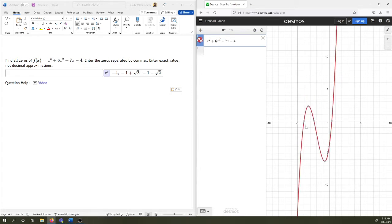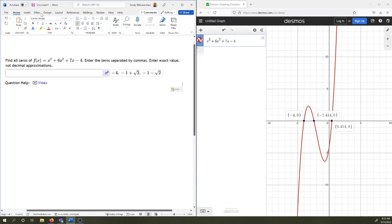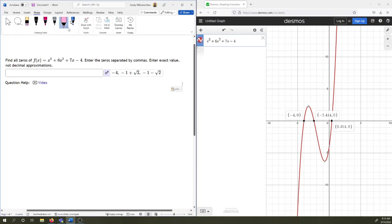We can look at the roots in Desmos. We see we have one nice root and two ugly roots. So you would expect three roots, since this is a cubic.